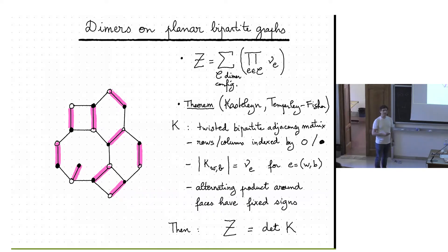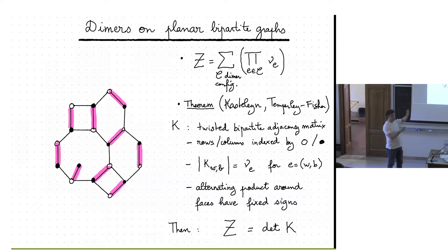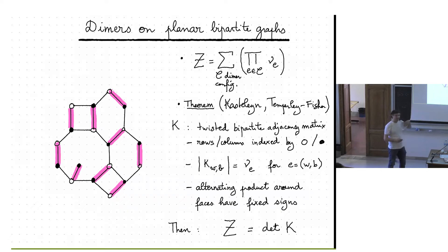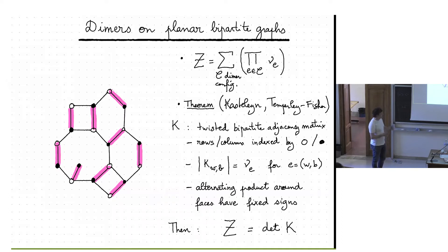This also works for non-bipartite graphs, where you need to use a larger matrix with rows and columns indexed by all the vertices and look at the Pfaffian of this matrix. But in this talk I will focus only on bipartite planar graphs.